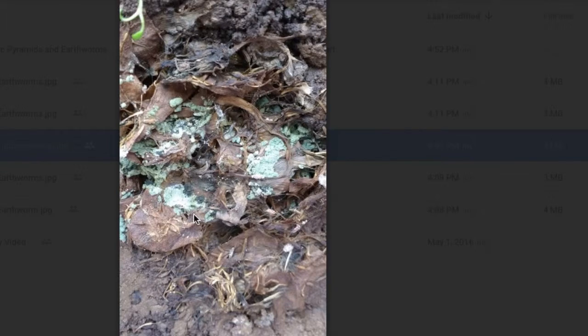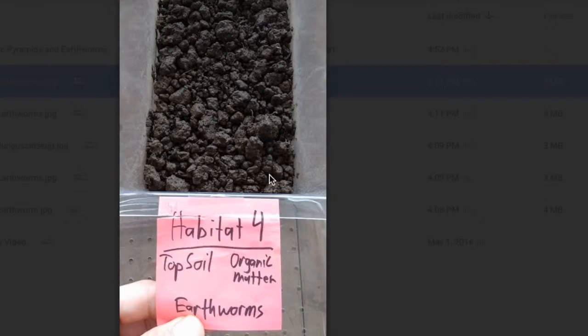Another claim that you can make is about what's happening to the organic matter in habitat three without the earthworms. If I zoom in here, you can see that the organic matter in habitat three has this fungus growing on it. That fungus is a decomposer that's attempting to get rid of the organic matter. In habitat four, there is no fungus. So you could claim that earthworms compete with fungus for the nutrients and energy that was available in that organic matter.